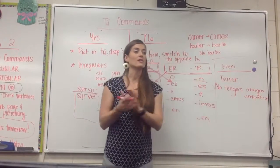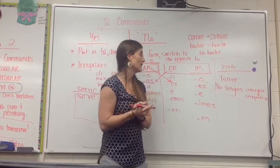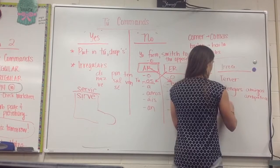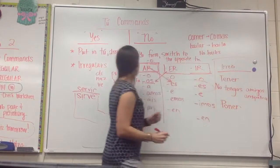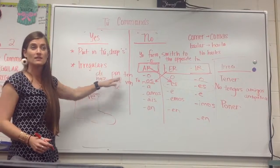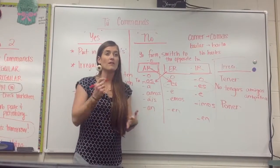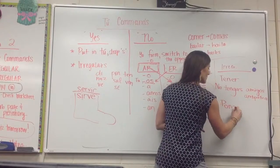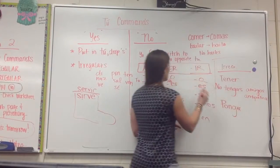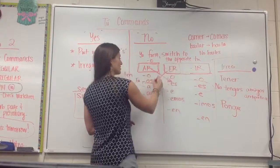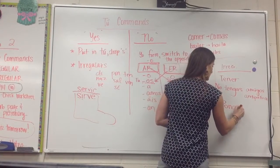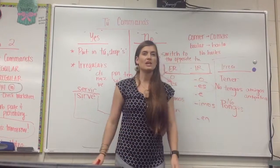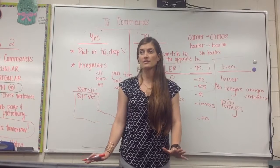I'm going to give you one more irregular and then you'll be on your own to finish out your assignment from yesterday. If I want to say, don't put on your shoes. Poner. Poner. It has nothing to do with pon, because we're not talking about yes commands. What is the yo form of poner? Vengo, tengo, salgo. Pongo. Pongo. Pongo. Drop my o. Poner is originally an ER verb, so let's put this to an as. Pongo. No pongas la chaqueta. No pongas la chaqueta. Don't put on your jacket.